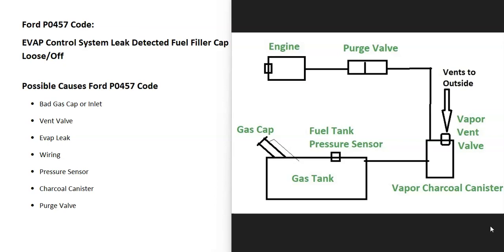The EVAP system ensures gas vapors don't escape into the atmosphere — this is for emissions. The onboard computer is seeing a problem in this side of the system, mainly that there's a leak, and so it's going to have to be troubleshot. Possible causes include a bad gas cap or the inlet, including the new Ford Easy Fuel capless systems.